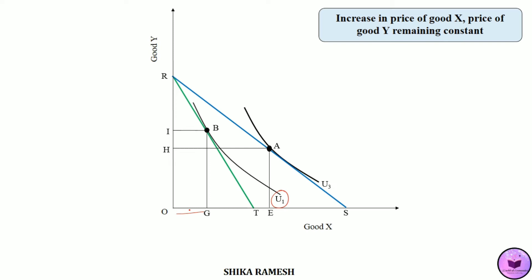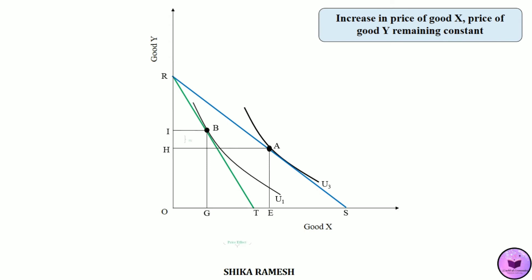Initially, the consumer was purchasing OE amount of good X, but due to the increase in the price of good X with the price of good Y remaining the same, the quantity demanded of good X has decreased from OE to OG. That is, the consumer has not demanded EG amount of good X. This clearly shows the law of demand in operation: when the price of good X increases, quantity demanded decreases. This decrease in quantity demanded of good X by EG amount is due to the price effect. Out of this EG amount, how much has decreased due to substitution and income effect will be found using Slutsky's cost difference method.